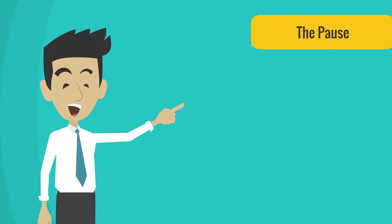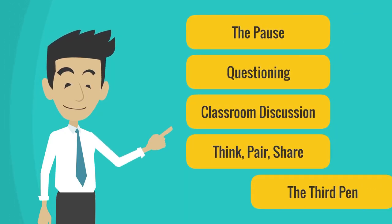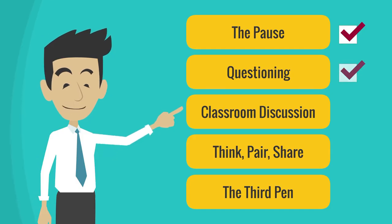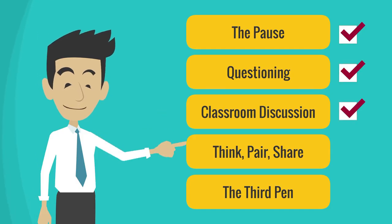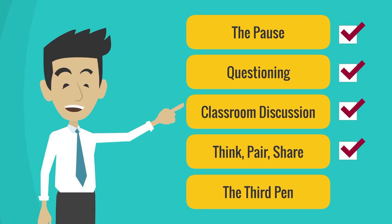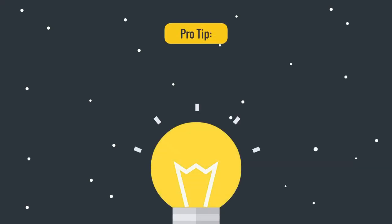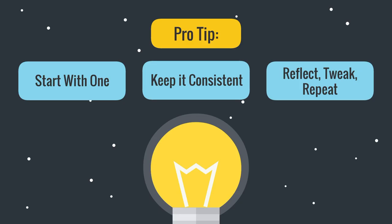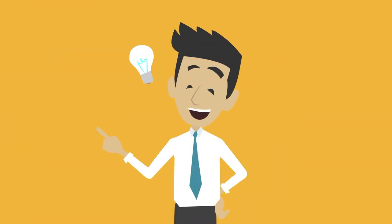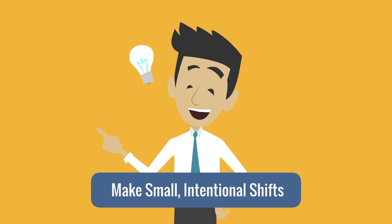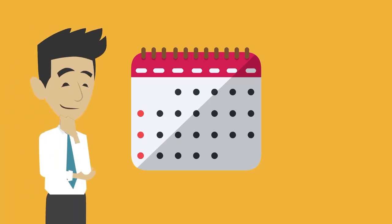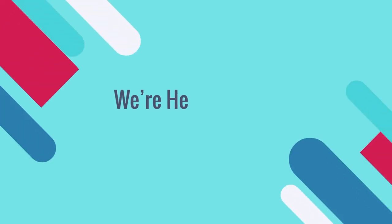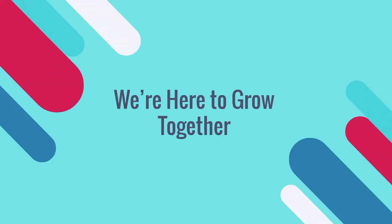And that's it — five research-backed strategies you can try right away: the pause, questioning, classroom discussion, think-pair-share, and the third pen. Pro tip: start with one, keep it consistent, reflect, tweak, and repeat. You don't need to overhaul your teaching — just make small, intentional shifts. Try one this week and let us know how it goes. We're here to grow together, one strategy at a time.